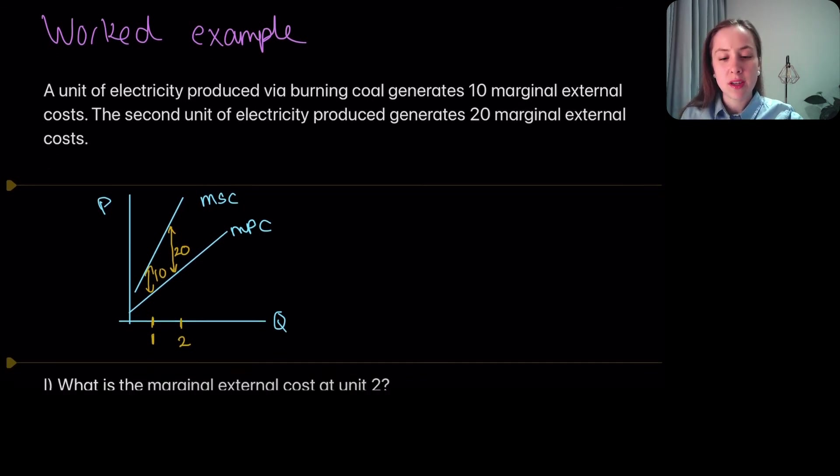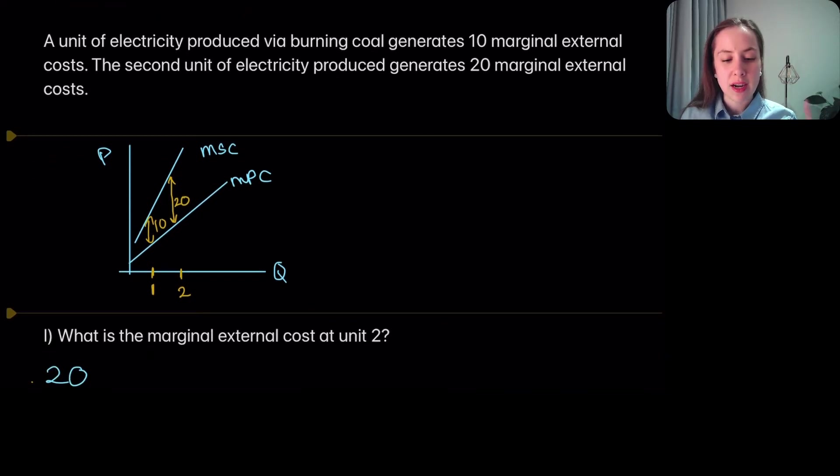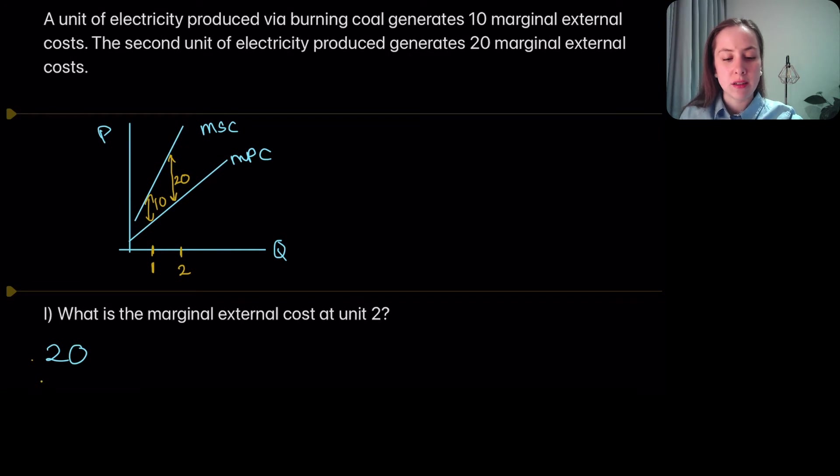For an example here, we have a unit of electricity produced by burning coal that generates 10 marginal external costs. The second unit of electricity generates 20 marginal external costs. I've drawn that in here in the diagram, so that first unit had an MEC of 10 and that second unit had an MEC of 20.